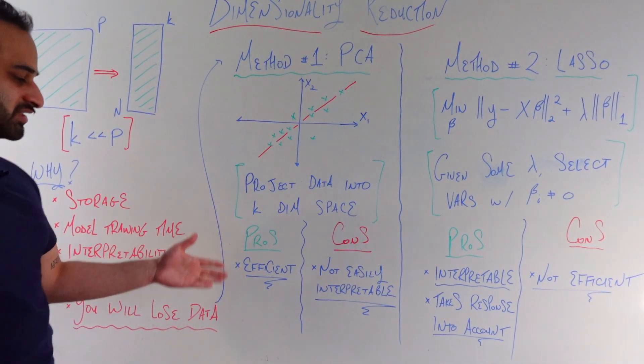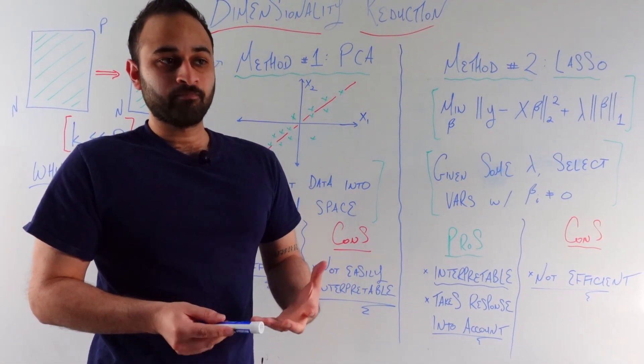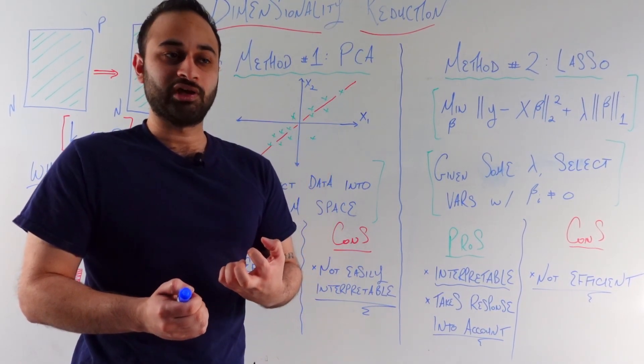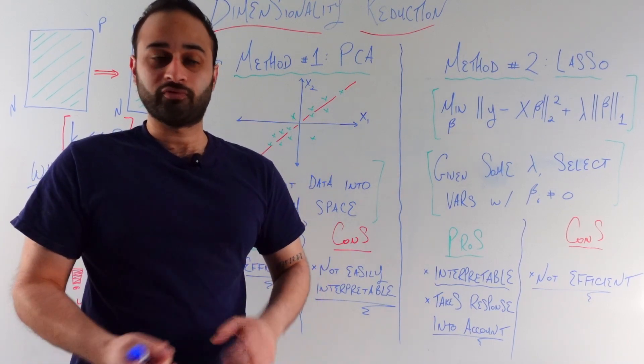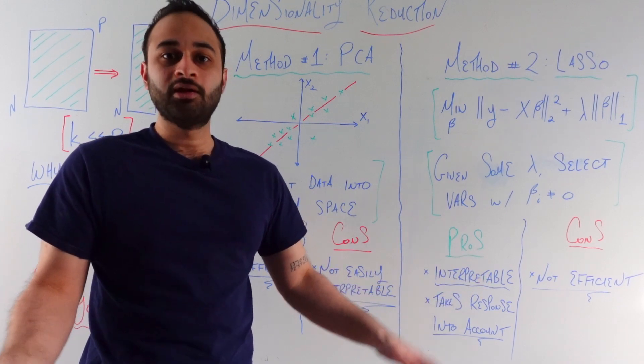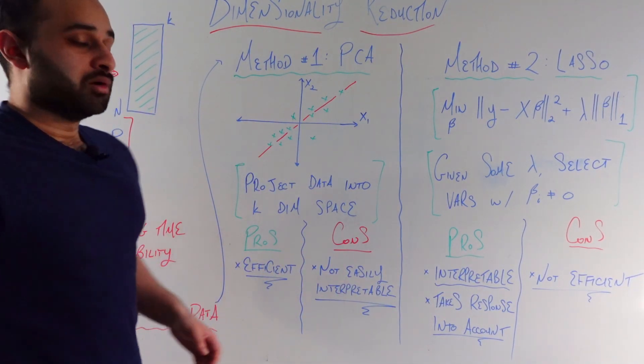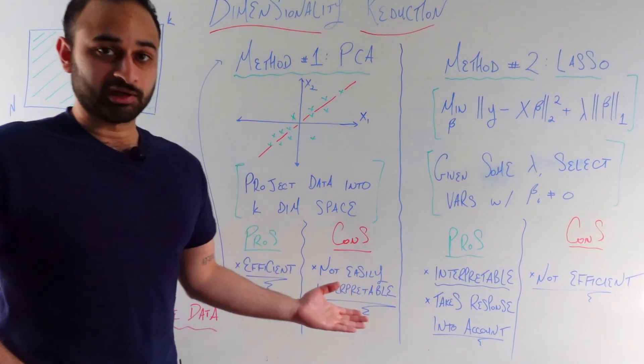Now the pros of this is it's efficient. If you go through the entire process of PCA, it's basically built to compress your data in such a way that you're going to be retaining as much of the variation in the original dataset as possible. That's the entire goal of PCA, and so it's no surprise that it's doing that in an efficient way.